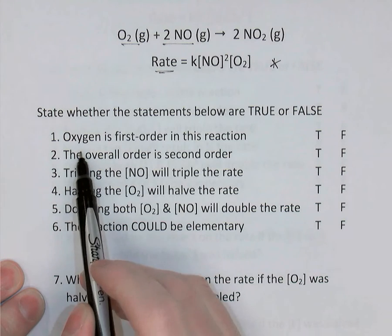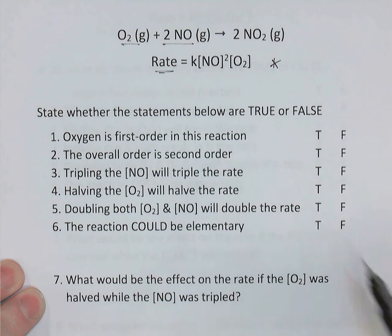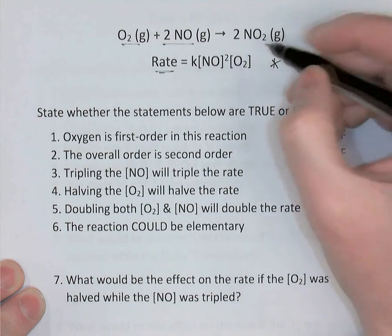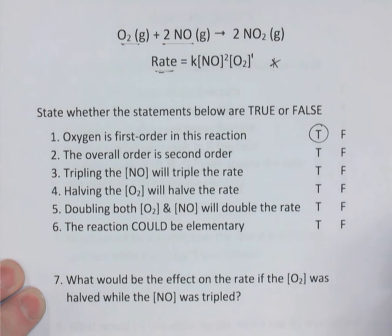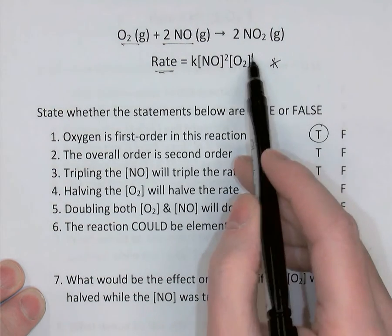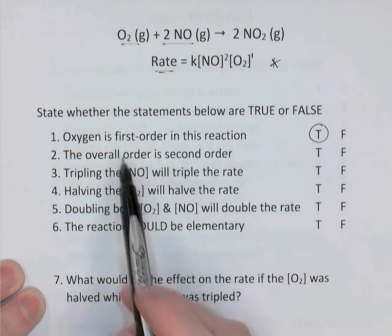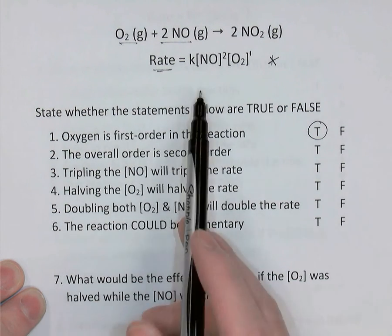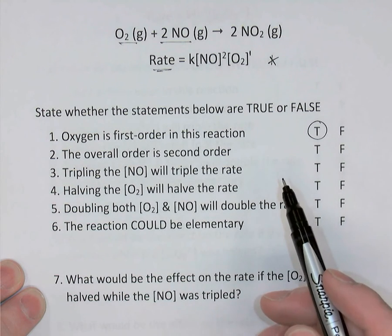The first statement says that oxygen gas is first order in the reaction. To decide, look at the rate law, not the balanced equation. In the rate law, oxygen's concentration is raised to the power of 1, so this is a true statement. Oxygen has an order of 1 — the orders are the exponents in the rate law. If the order were 2, it would be second order; if 0, zero order.